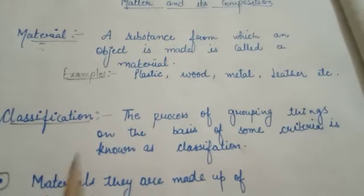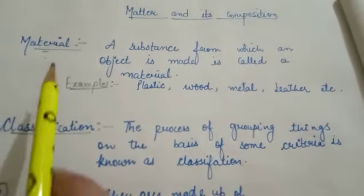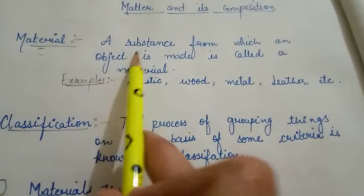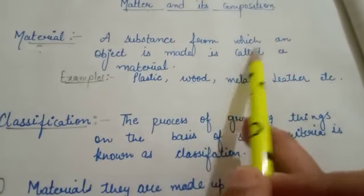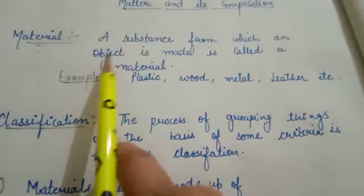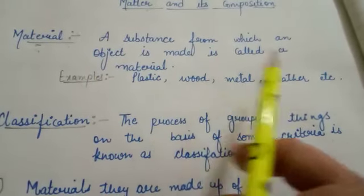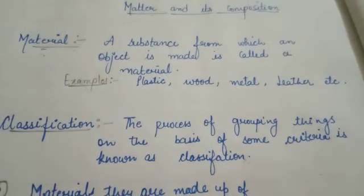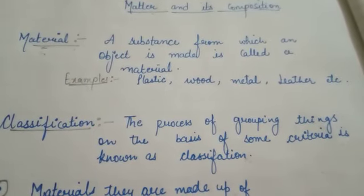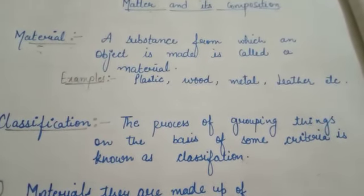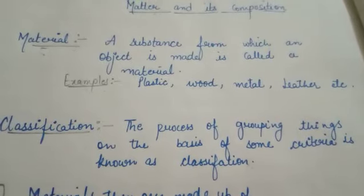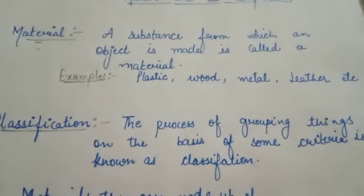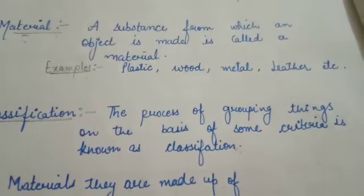Now, the definition of material: a substance from which an object is made is called a material. Ki woho koi bhi substance jis se koi object banti hai, usko hum material bolte hai. The examples of materials are plastic, wood, metal, leather, fiber, etc.